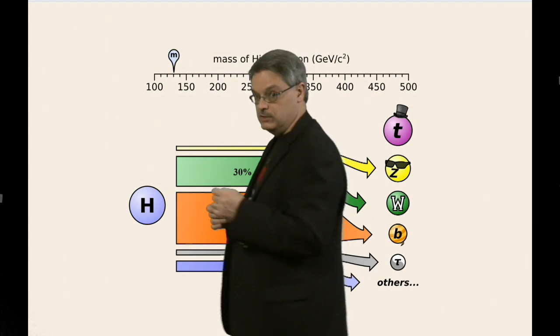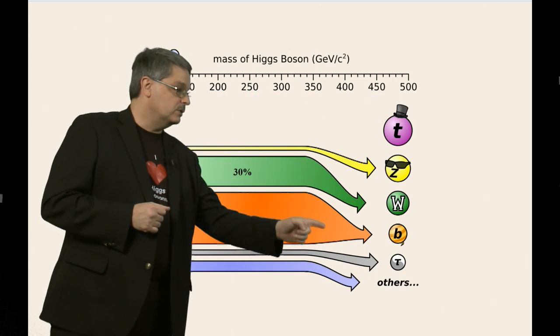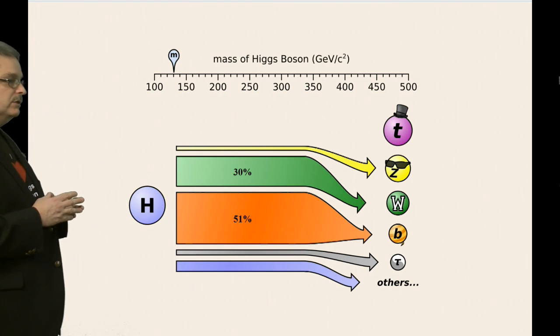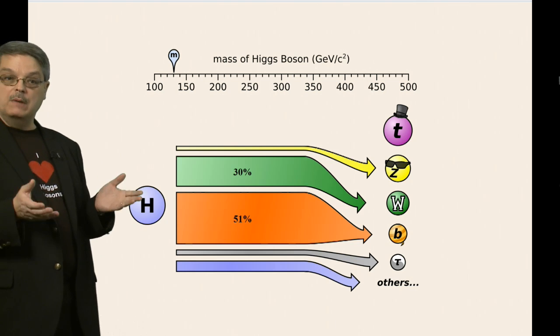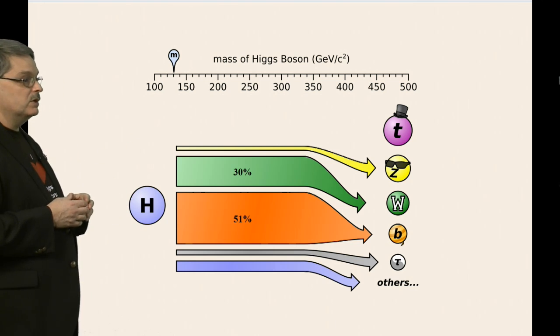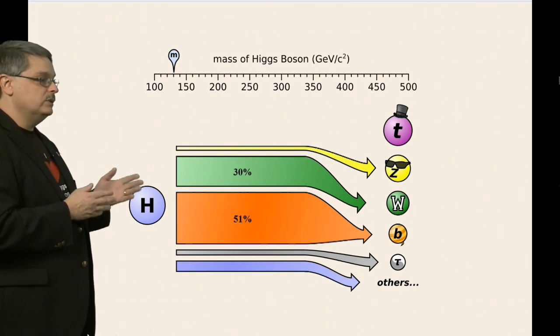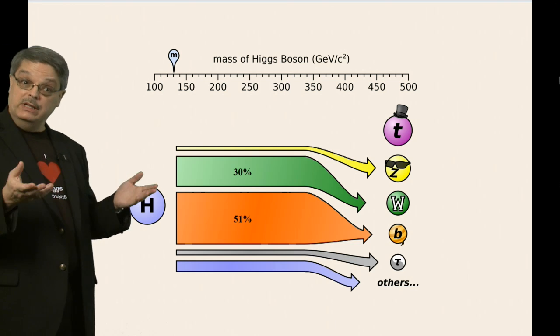So let's take a look at this graphic here. The Higgs boson is on the left, while there are five other particles arranged in a column on the right. They are the most common particles into which the Higgs boson can decay. Between them are some bars. The thickness of the bar represents the probability that the Higgs boson will decay into that particle.